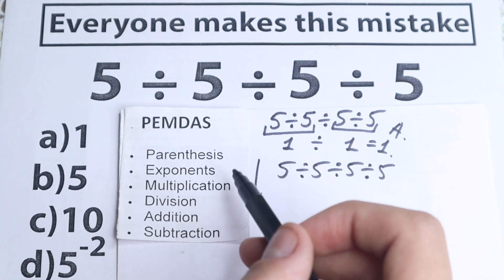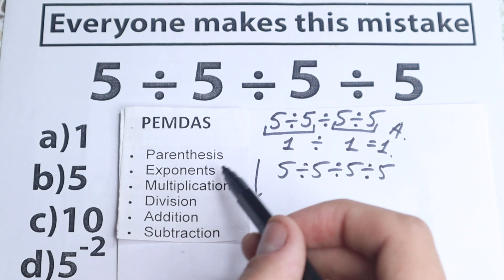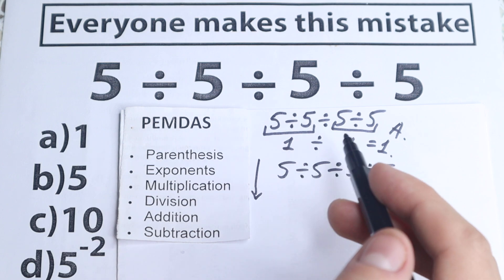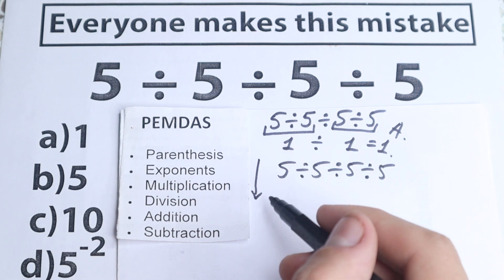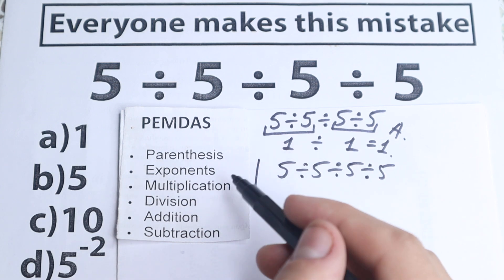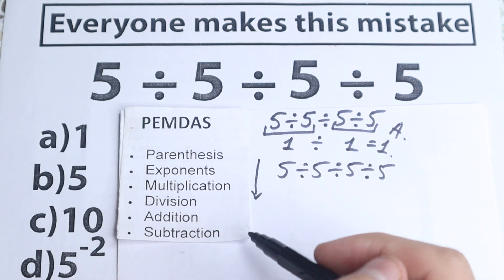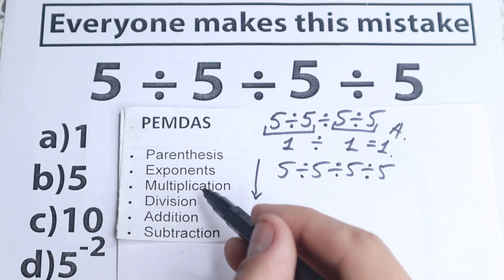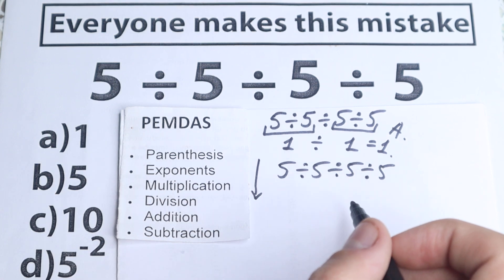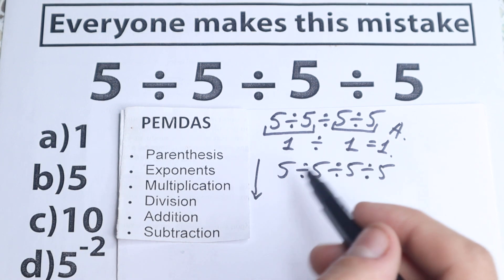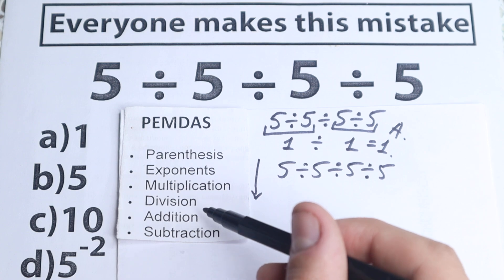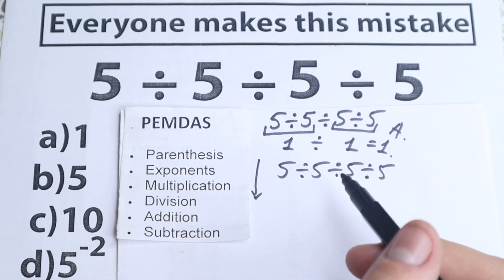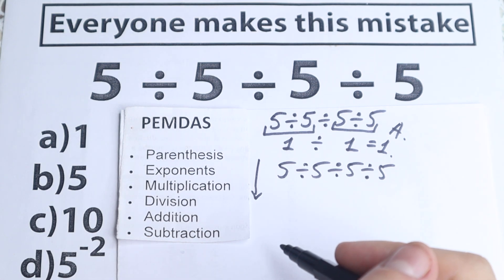We go to the next step: exponents. Are there any exponents here? No, so we skip these first two steps. The next step is multiplication and division. A lot of students make a common mistake — they forget about division, because multiplication and division are one group.